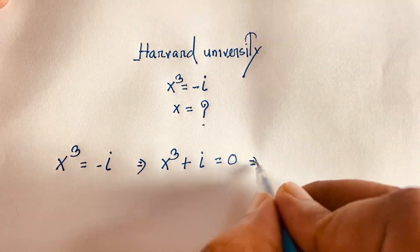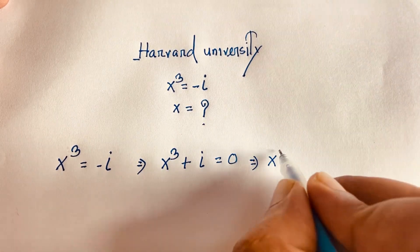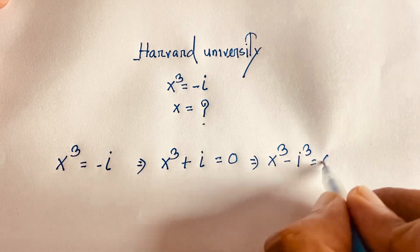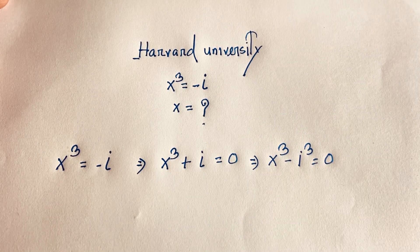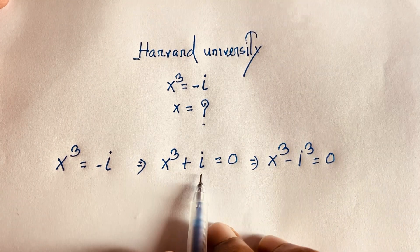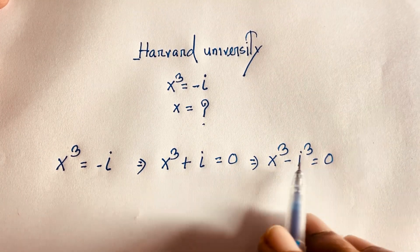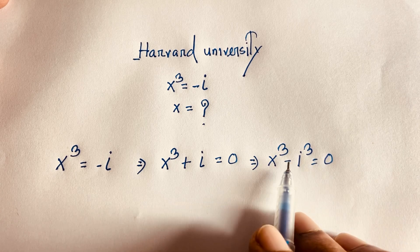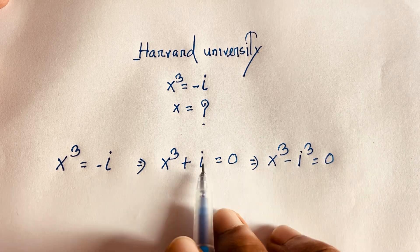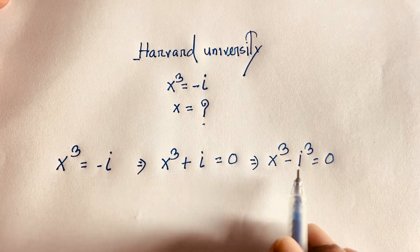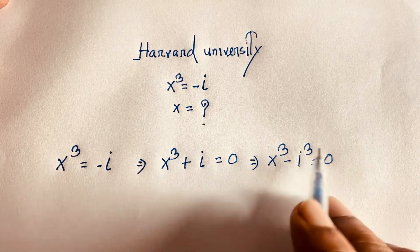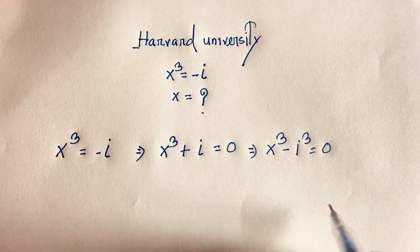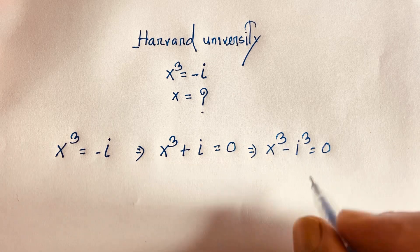Now consider that it will be x to the power 3 minus i to the power 3 is equal to 0. How? Because i to the power 3 is equal to negative i. So negative i equals minus i to the power 3, and we can substitute accordingly.